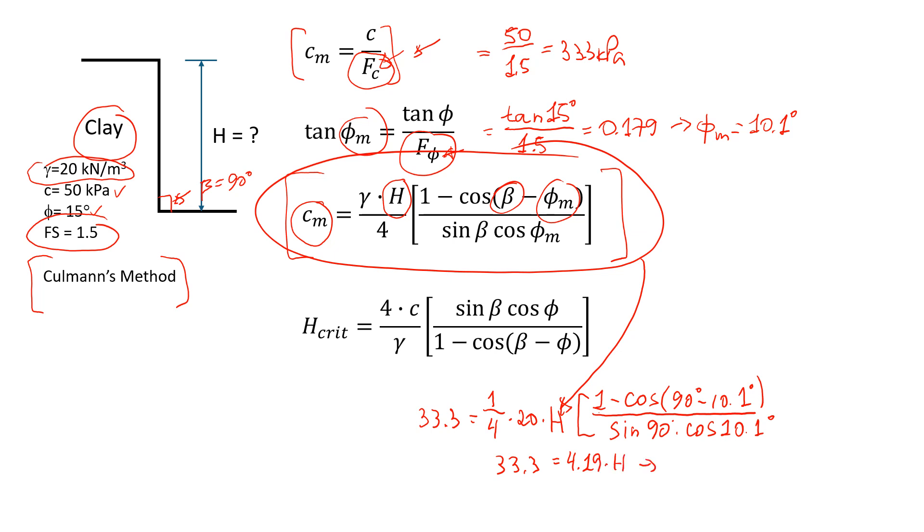From here we find that H will be approximately 7.95 meters. This means that for this particular setup with a vertical cut in clay, if we want to design to a safety factor of 1.5, the maximum cut will be 7.95 meters.